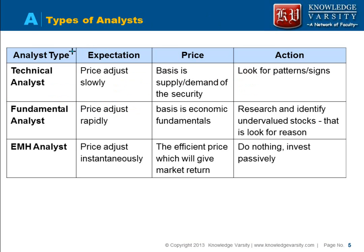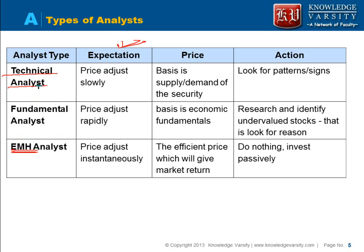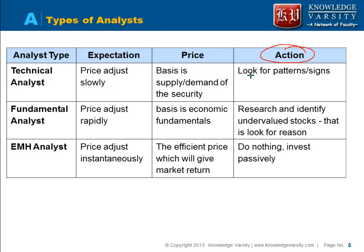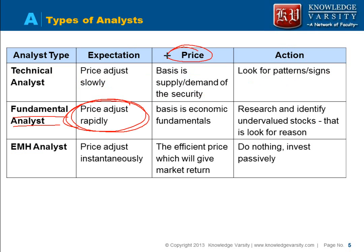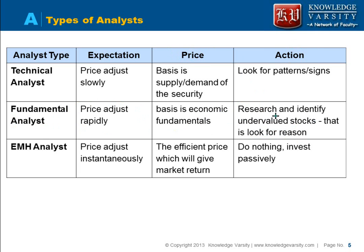Now let's look at different types of analysts: technical analyst, fundamental analyst, and EMH analyst — the efficient market hypothesis analyst. Technical analysts believe that prices adjust slowly to new information, because people take time to analyze. They look for known patterns or signs in the chart to decide the price direction. Fundamental analysts say the price adjusts rapidly and is based on economic fundamentals. Their action is to research stocks and identify undervalued stocks — they look for reasons why a stock is undervalued.